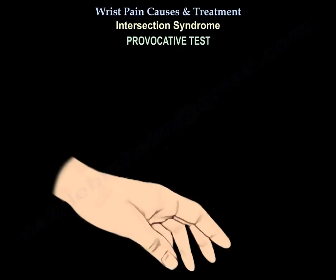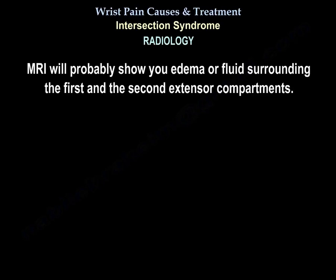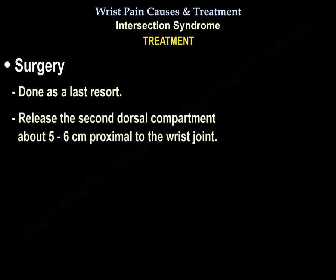Provocative testing: pain worsens with resisted wrist extension; X-ray will not show findings, but crepitus can be felt over the area with resisted wrist and thumb extension. MRI will likely show edema or fluid surrounding the first and second extensor compartments. Treatment is usually rest, splinting, and steroid injection — inject around the second dorsal compartment, not into the tendons; ultrasound-guided injection may be helpful. Surgery is the last resort — release the second dorsal compartment about 5 to 6 cm proximal to the wrist joint.